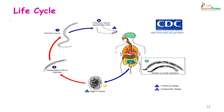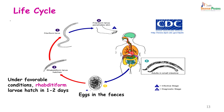Let us look at the life cycle. Unlike the direct cycle for whipworm and pinworm, or the modified direct cycle for roundworm, hookworms and Strongyloides have an indirect cycle. Eggs are passed in the feces and mature into the rhabditiform larva. This maturation takes about 1 to 2 days, provided an optimal environment — shaded, cool, and moist.